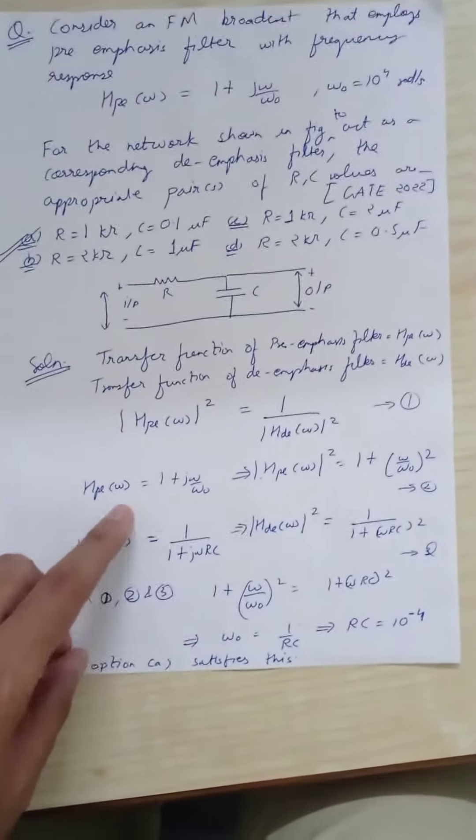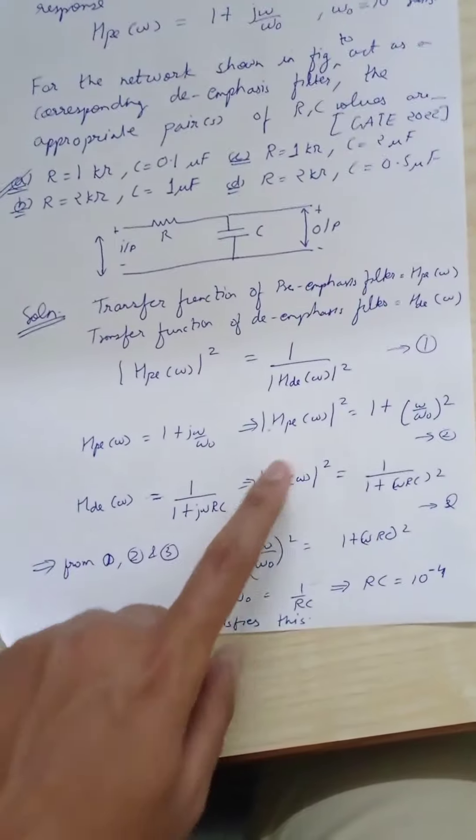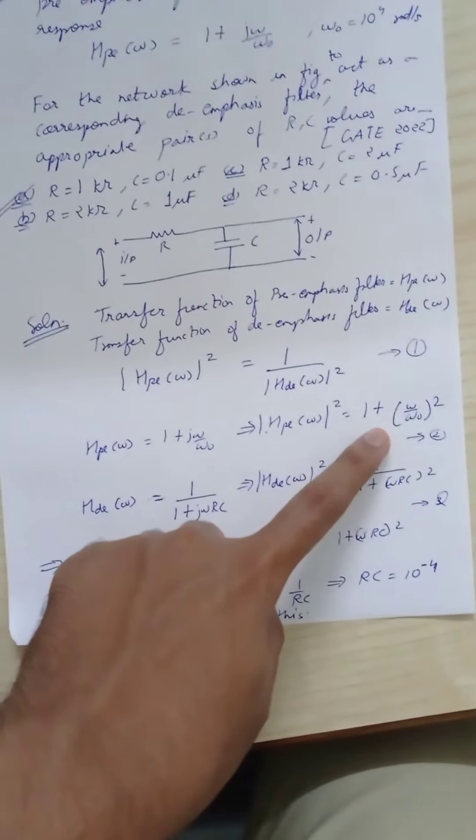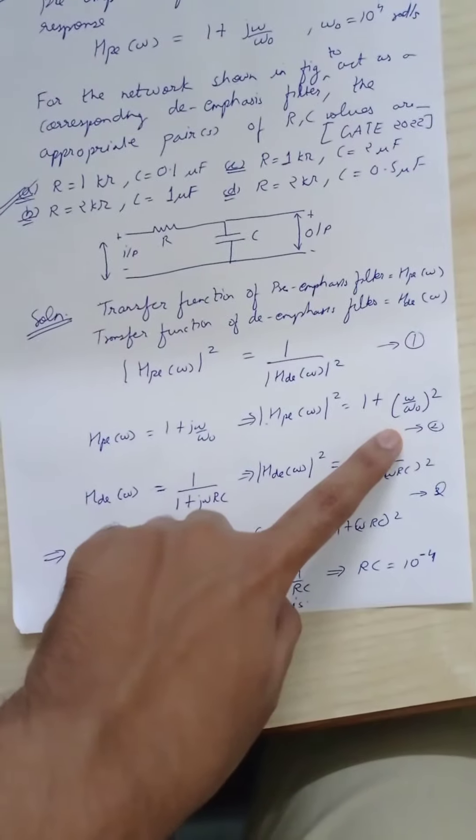We are given Hp(ω), so we can find its magnitude squared: it will be 1 + (ω/ω₀)². Let this be equation 2.